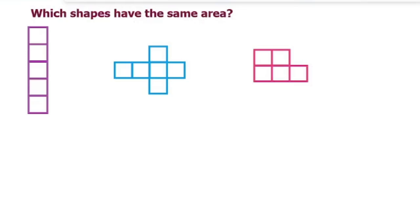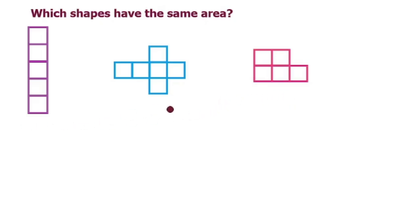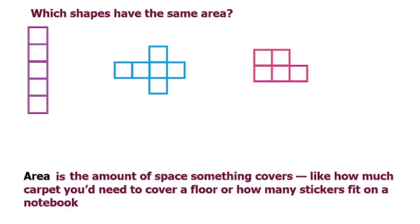In this video we're going to look at this problem that says which shapes have the same area. There are three different shapes here and you're probably thinking to yourself how could they possibly have the same area when they look so different. Well first we need to understand the meaning of area — area is the amount of space something covers.